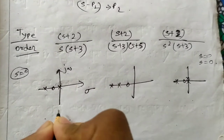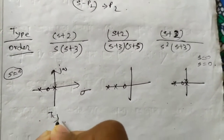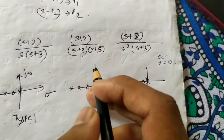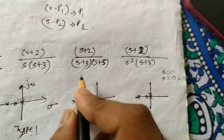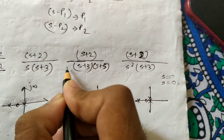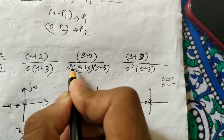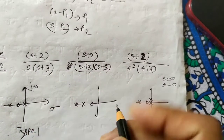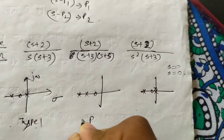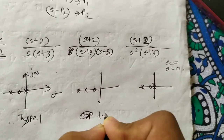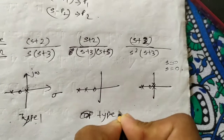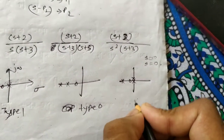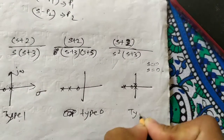If there is one S term in the denominator, one pole is at the origin — so the type is 1. If there is no S term, you can think of it as S to the power zero equals 1, so there are zero poles at the origin and the type is 0. If S squared is given, there are two poles at the origin, so the type is 2.